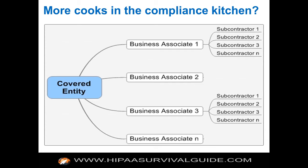What it looks like now: a covered entity can have multiple business associates — call them direct business associates. Each one of those BAs can have their own subcontractors, who are also business associates, and subs can have subs all the way down the line. A covered entity does not have to have a business associate agreement with subcontractors of its BAs — only with its direct business associates. It's the responsibility of business associate one to have BA agreements with its own subs.